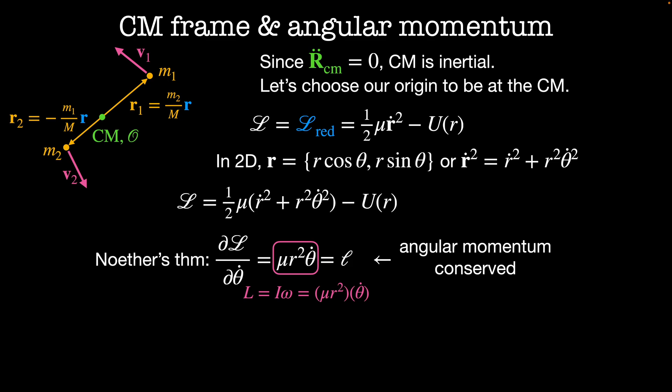Since θ is an ignorable coordinate, we only need to consider the evolution of the r coordinate. This is given by the Euler-Lagrange equation: dL by dr minus d by dt of dL by dr dot equals zero, which equals dU by dr plus μ θ dot squared minus μ r double dot is equal to zero.